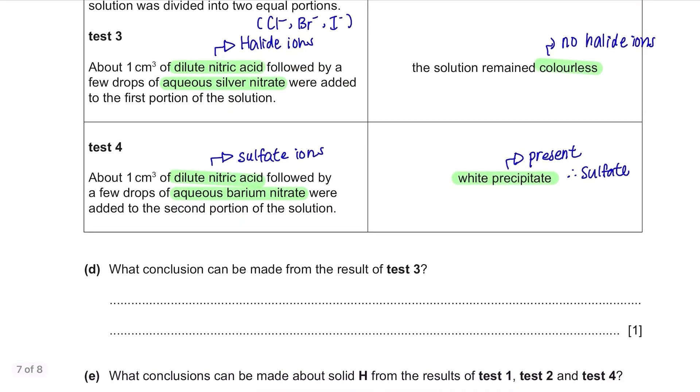Part D. What conclusion can be made from the result of test 3? We already went through it. It's a test for halides. And the result shows that solid H is not a halide.